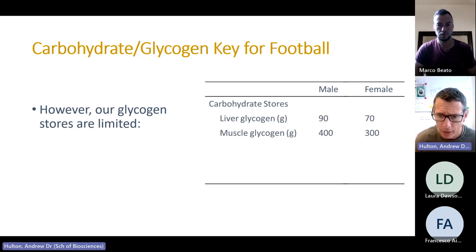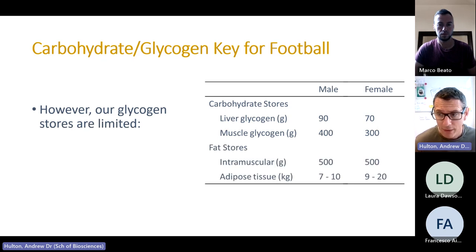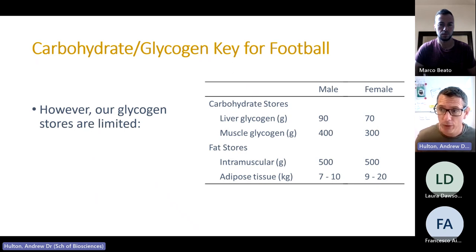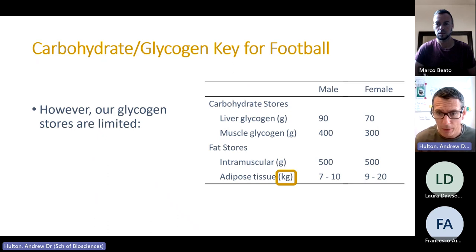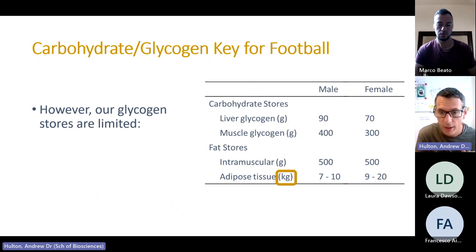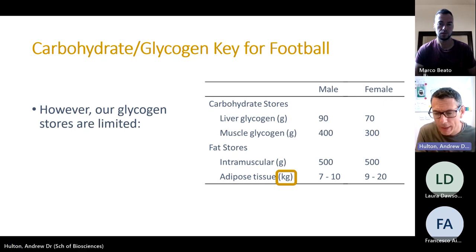This highlights that carbohydrates and muscle glycogen are really important for football. However, our body has a limited storage capacity for glycogen — roughly 400 grams for an average 60 kg female and 500 grams for a 70 kg male. Compare that to fat: we have far more energy stored intramuscularly and in adipose tissue — 7 to 10 kilograms in males and 9 to 20 kilograms in females. But we can't utilize that fat energy for high-intensity work.